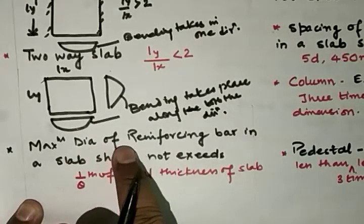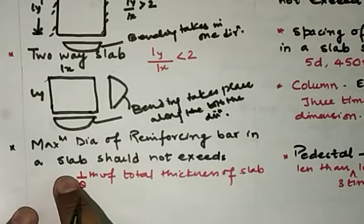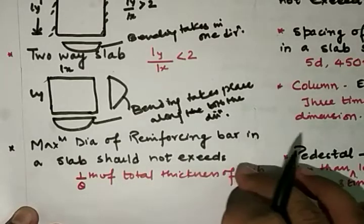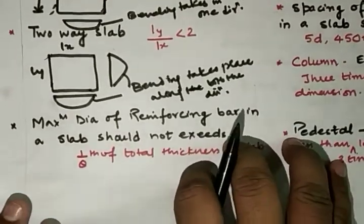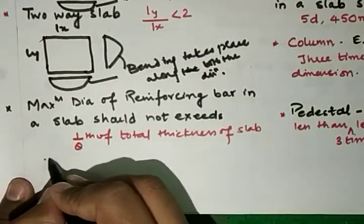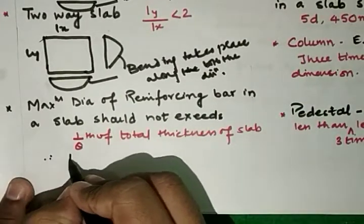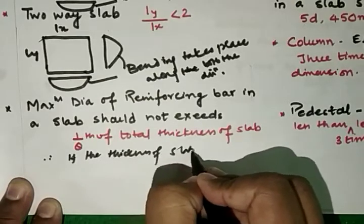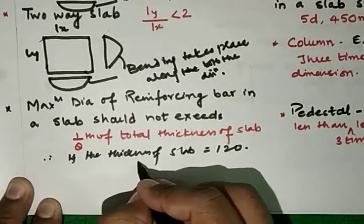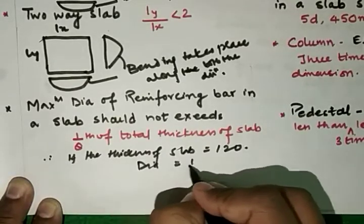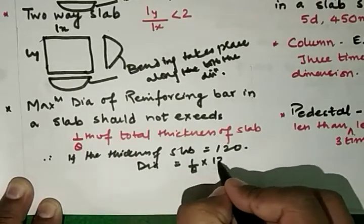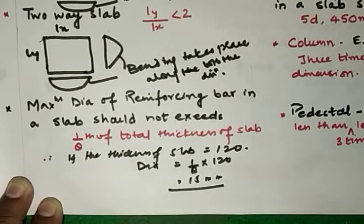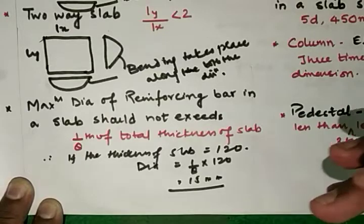The next point is the maximum diameter of a reinforcing bar in a slab. The maximum diameter of a reinforcing bar should not exceed 1/8th of the total thickness of the slab. For example, if the thickness of the slab is 120 mm, then the maximum diameter is 1/8th of 120, which equals 15 mm. So we cannot use bars with a diameter greater than 15 mm in that slab.